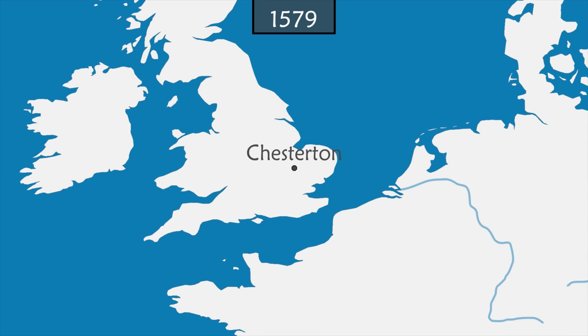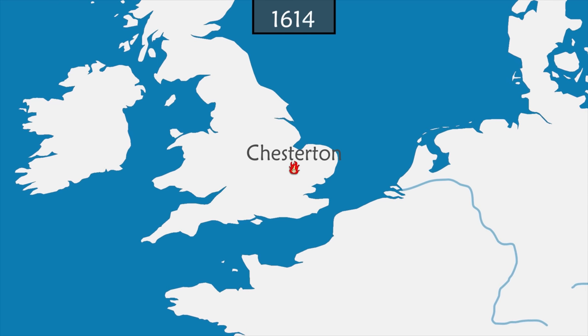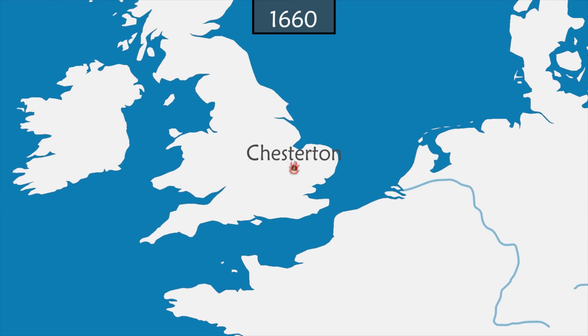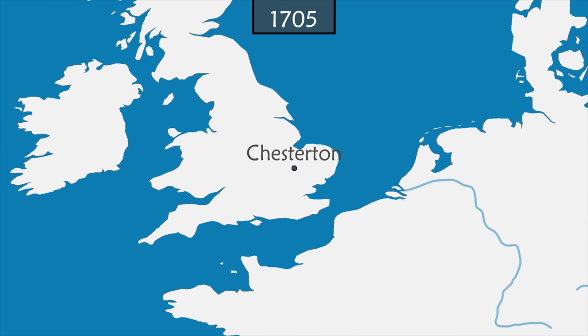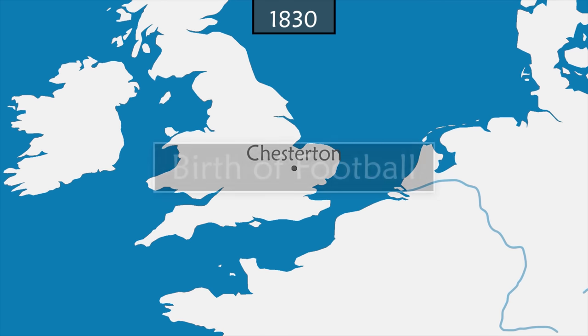In 1579 in Chesterton, a match between Cambridge University students and villagers got out of hand. As a result, Cambridge students thereafter only played on their own university field.